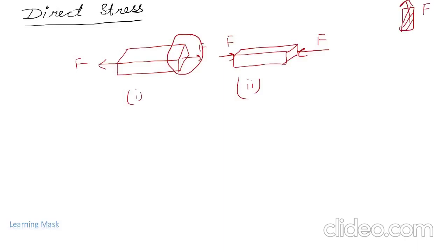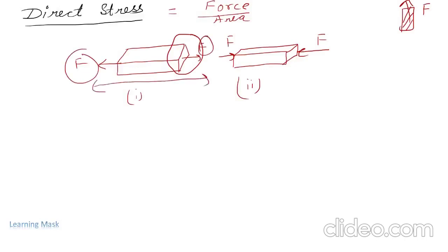Direct stress is defined as the ratio of force to area. The tendency of this force is to elongate the surface, so this force is known as tension. If you observe the other case, the force is compressing the object — it will shorten the object — so that force is known as compressive force, that is compression.